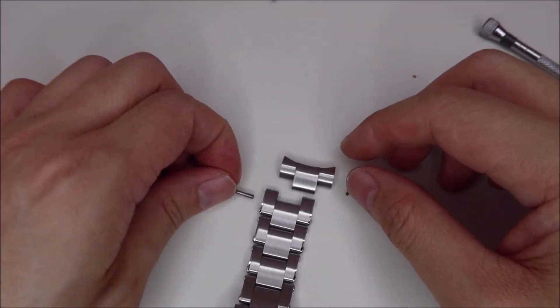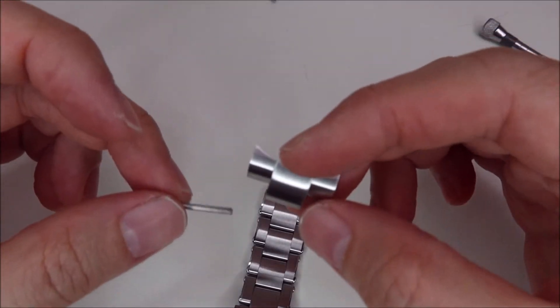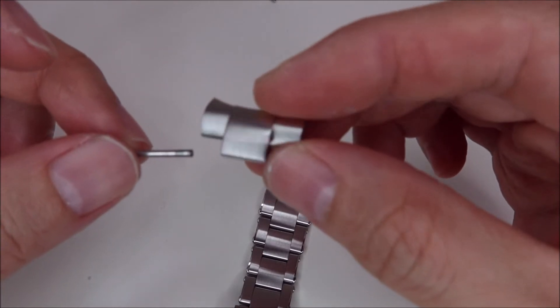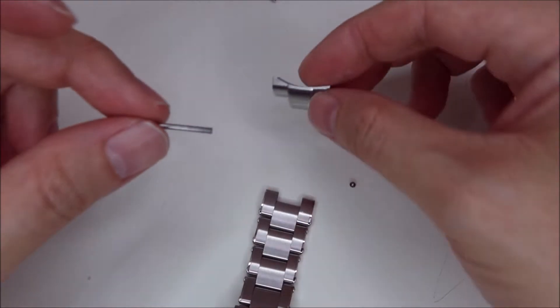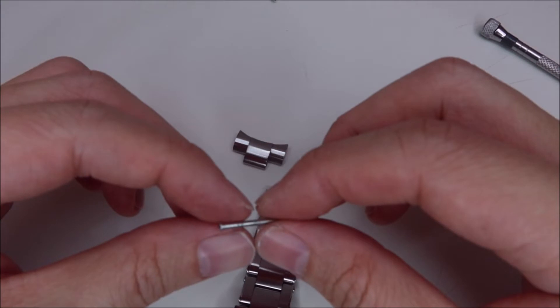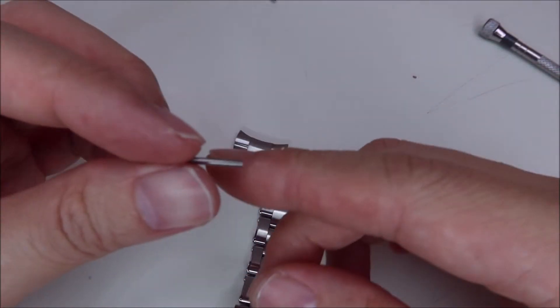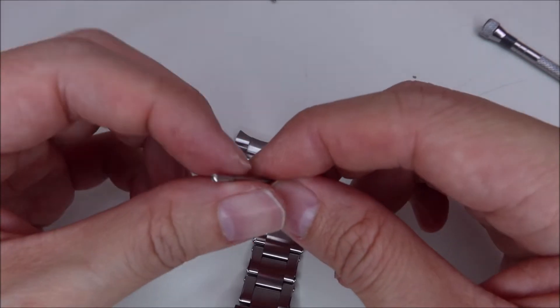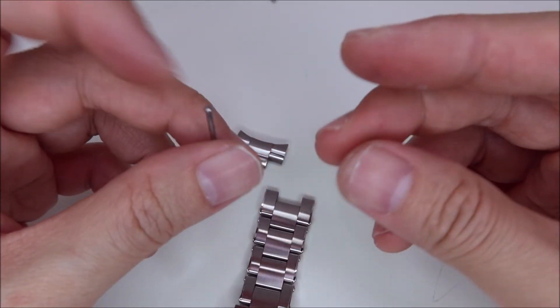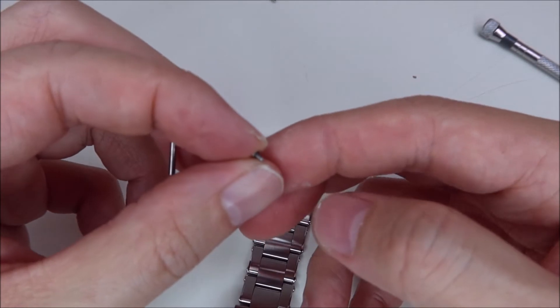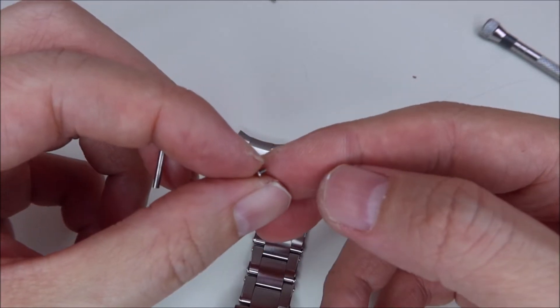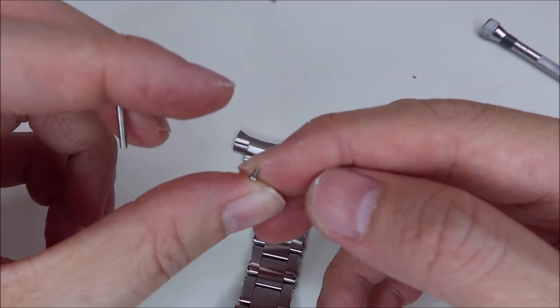Okay. A quick update here. So yup, I've unscrewed the end links from the bracelet. And as you can see here, this setup is like, you know, you have a collar that also comes with a screw head. And there is also a tiny, tiny screw, which I'm trying to hold in between my fingers and my thumb.